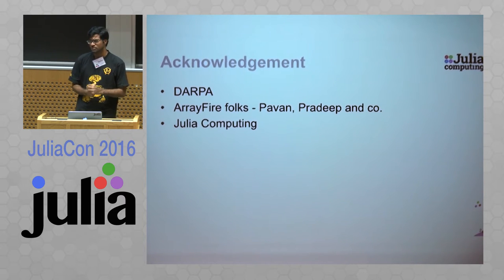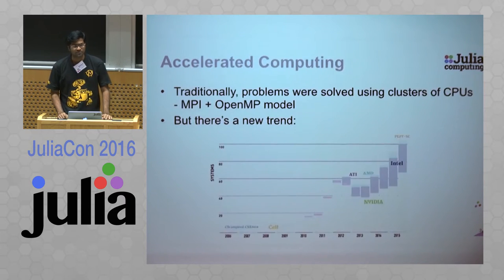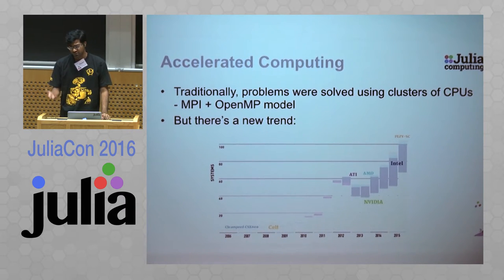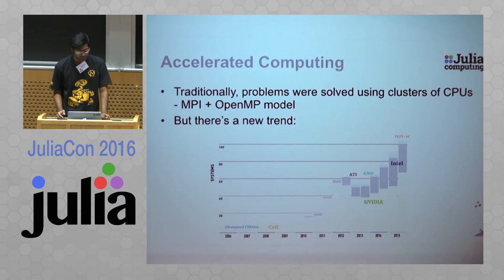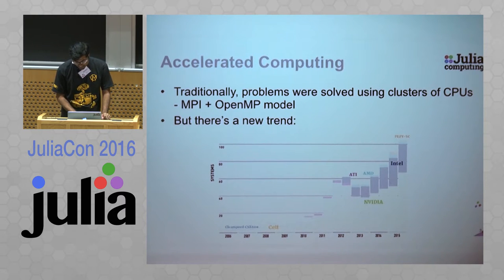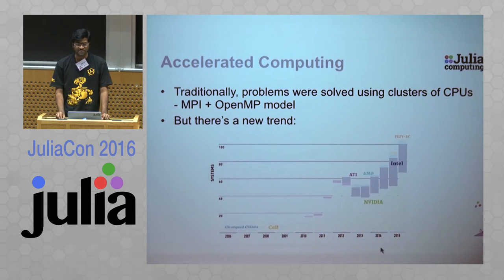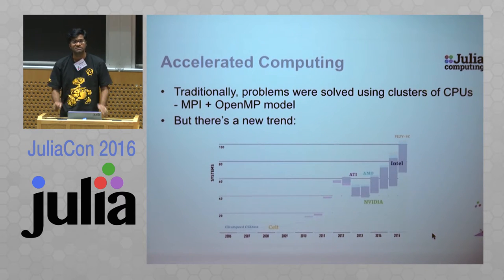One approach to hide latency from different computations is by using accelerated computing. Traditionally, most problems have been solved with clusters of CPUs in an MPI plus OpenMP kind of model. But a new trend has been overtaking this over the past few years with the rise of accelerators. As you can see in this graph, the number of accelerators has been steadily increasing, and as of SC15, the number of accelerated clusters in the top 500 has risen to 109.